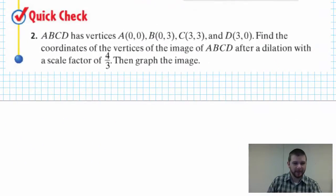Quick check number two: ABCD, we can assume is a quadrilateral, has vertices A at the origin, B at (0, 3), C at (3, 3), and D at (3, 0). Find the coordinates of the vertices of the image, which I often call post image, of ABCD after a dilation with a scale factor of four thirds, then graph the image. So you'll follow a very similar process to above: steps one and two, multiply each x and y coordinate by four thirds before graphing.